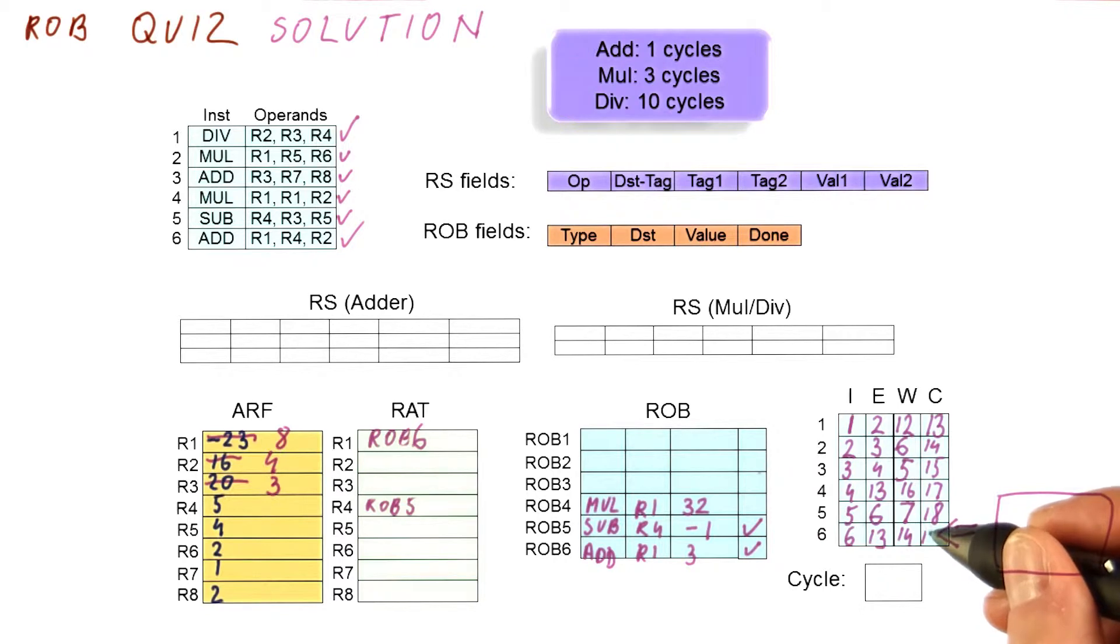And then finally, this becomes 19. So the correct answer here is 19. You can see that to determine this, we didn't actually have to figure out what really happens here. But let's do that for the sake of exercise.